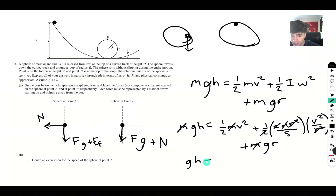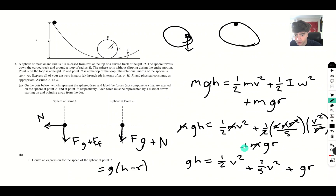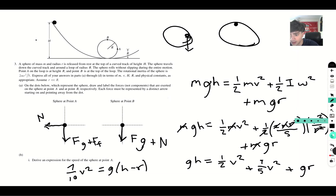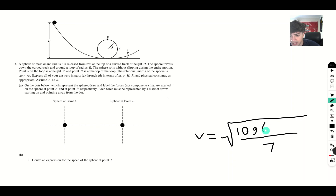From here, gh minus gr equals g(h minus r) equals seven-tenths v squared, since one-half plus one-fifth equals seven-tenths. Therefore, our final velocity is v equals the square root of (ten-sevenths times g times (h minus r)). We'll keep this result handy for the next part.